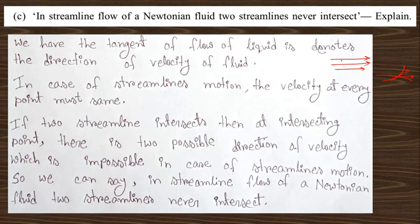Question 1c: In streamline flow of a Newtonian fluid, two streamlines never intersect. In streamline flow the velocity at each point is constant along a streamline. If two streamlines were to intersect, the resultant velocity at that point would change, which would violate the definition of streamline flow. Intersecting streamlines occur in turbulent motion, not in streamline motion.